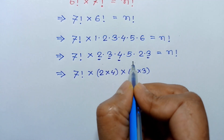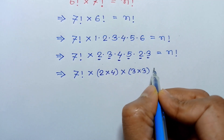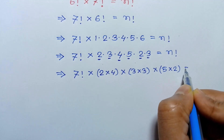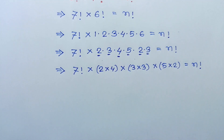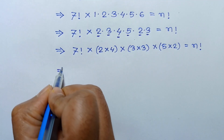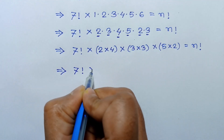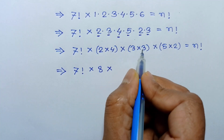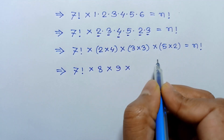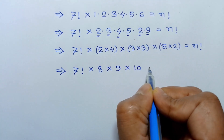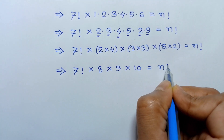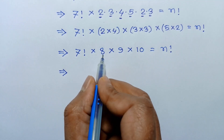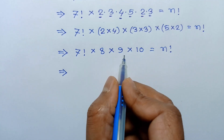This is 9 and the next number is 10. Taking this 5 and 2, it will be 5 times 2 equal to n factorial. This 7 factorial times 2 times 4 is 8, times 3 times 3 is 9, times 5 times 2 is 10, is equal to n factorial. So 7 factorial times 8 times 9 times 10 is 10 factorial.